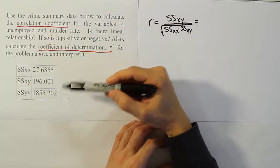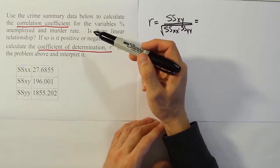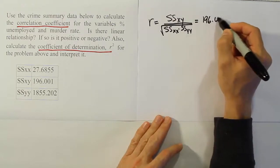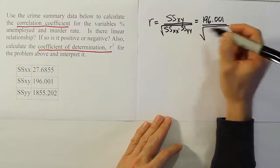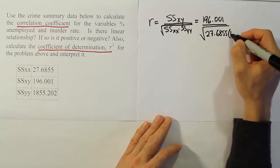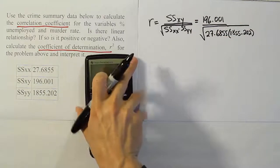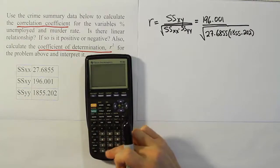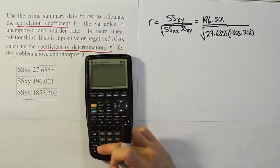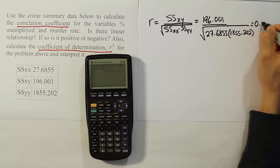We have the summary values from a crime study looking at two variables. The x variable is the percent unemployed, and the y variable is the murder rate. The idea is to see if there's a linear relationship. ssxy turns out to be 196.001, divided by the square root of ssxx which is 27.6855 times ssyy which is 1855.202. When we work that out, we end up with r = 0.865.